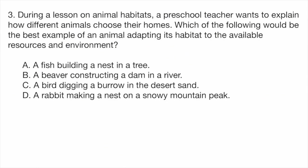Question 3. During a lesson on animal habitats, a preschool teacher wants to explain how different animals choose their homes. Which of the following would be the best example of an animal adapting its habitat to the available resources and environment? A, a fish building a nest in a tree. B, a beaver constructing a dam in a river. C, a bird digging a burrow in the desert sand. D, a rabbit making a nest on a snowy mountain peak.